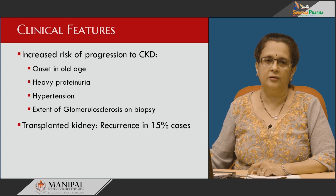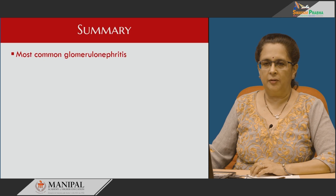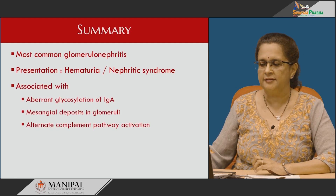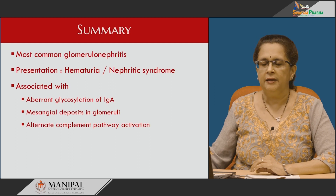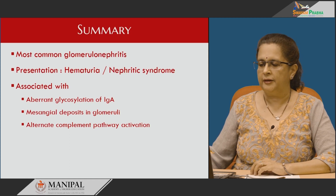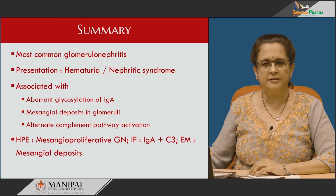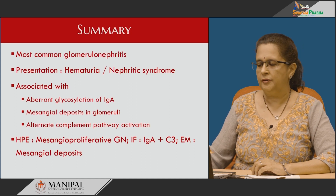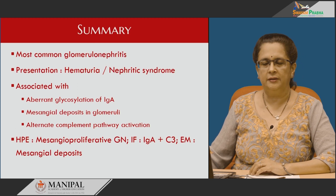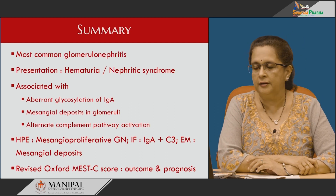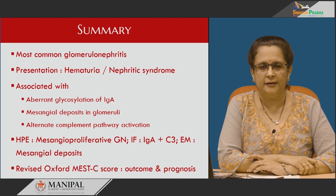In conclusion, IgA nephropathy is one of the most common glomerulonephritides, presenting as hematuria or nephritic syndrome. It is associated with three key factors: aberrant glycosylation of IgA leading to mesangial deposits of IgA on immunofluorescence, and activation of the alternate complement pathway. Histopathologically, we see mesangioproliferative glomerulonephritis with IgA and C3 either codominant or IgA dominant deposits on immunofluorescence, and mesangial deposit predominance on electron microscopy. The revised Oxford MEST-C classification is important for predicting outcome and prognosis. Thank you.